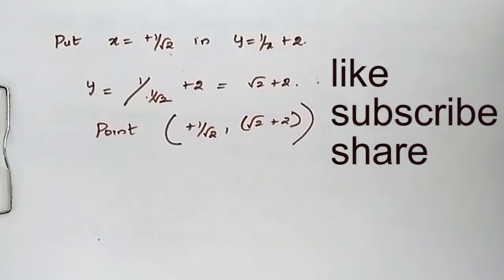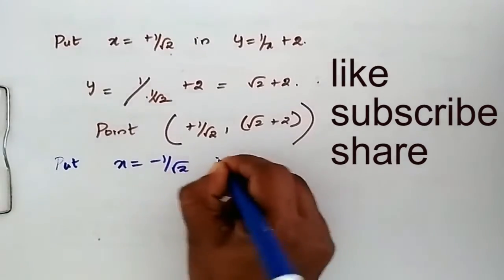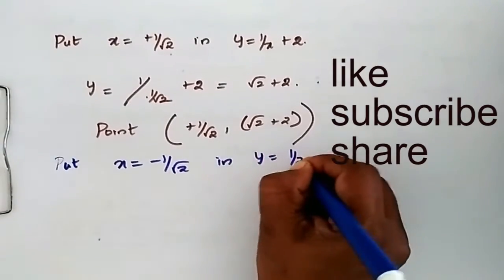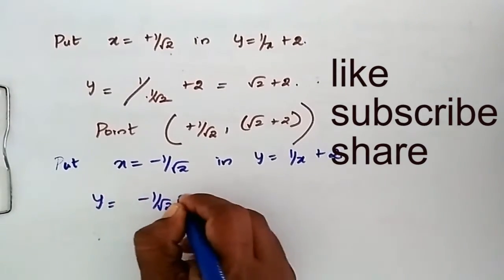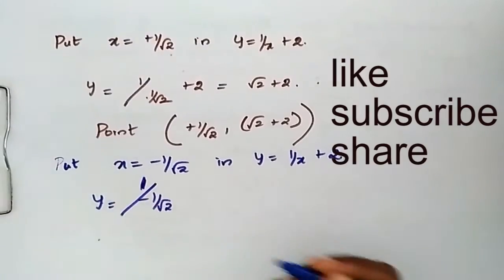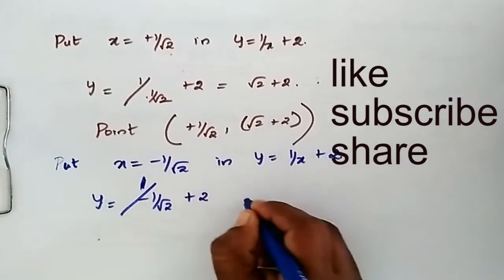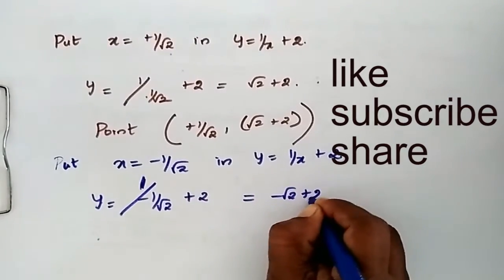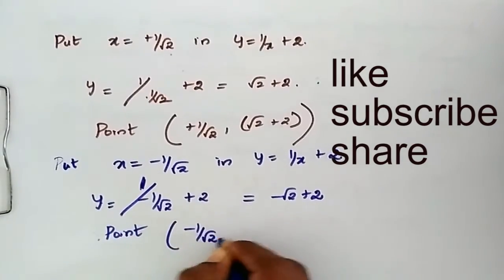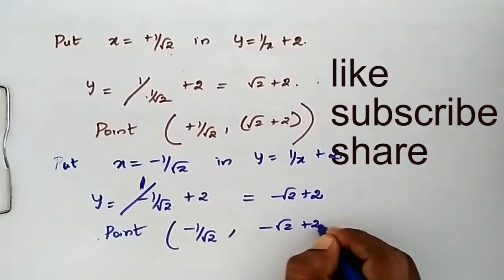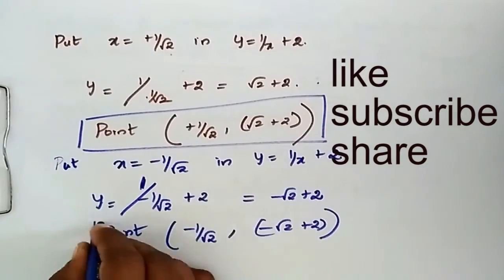Now put x = -1/√2 into y = 1/x + 2. This simplifies to y = -√2 + 2. So this point is (-1/√2, -√2 + 2). These are the two points where the tangent line has slope -2.